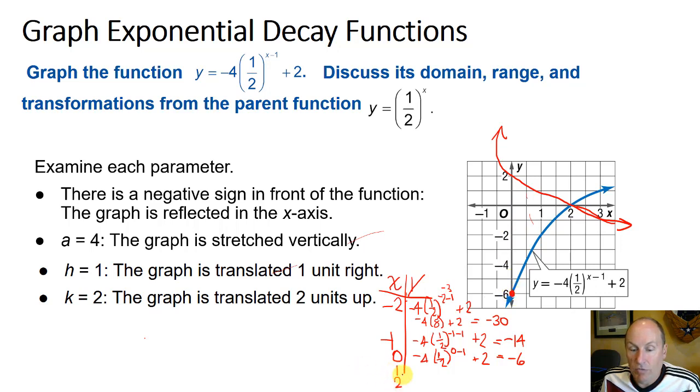We'll do a couple of positive numbers. At 1, that gives us negative 4 times 1 over 2 to the 0, or just 1, so negative 4 plus 2 gives us negative 2. If I put in a 2, I get negative 4 times 1 half to the 2 minus 1 plus 2. That becomes negative 4 times 1 half, or negative 2 plus 2 equals 0. So it intercepts the x-axis at 0.